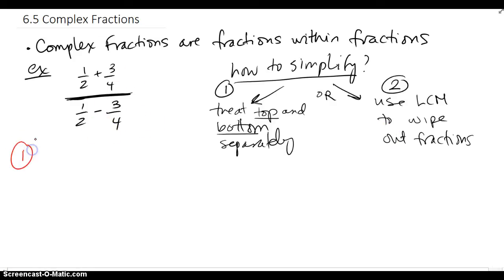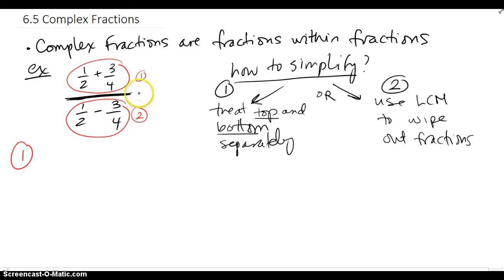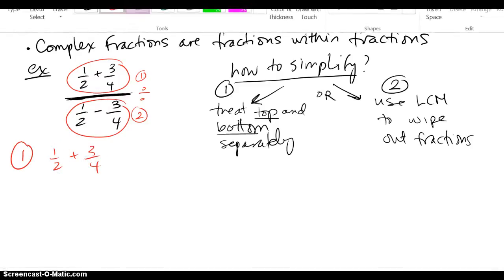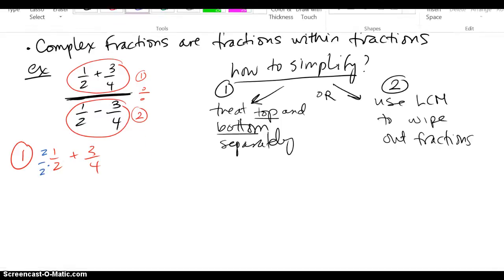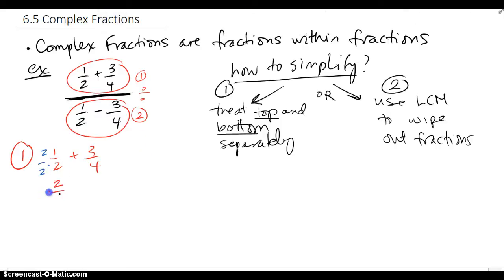For Method 1, I'm going to look at the top and the bottom separately — I'll call this one and that two, and when I'm done I'm going to divide one by two. I need the numerator to be one fraction, and I'm going to need a common denominator of four, so I multiply top and bottom of the first fraction by four. That gives me two fourths plus three fourths, which is five fourths. So we're done with the top.